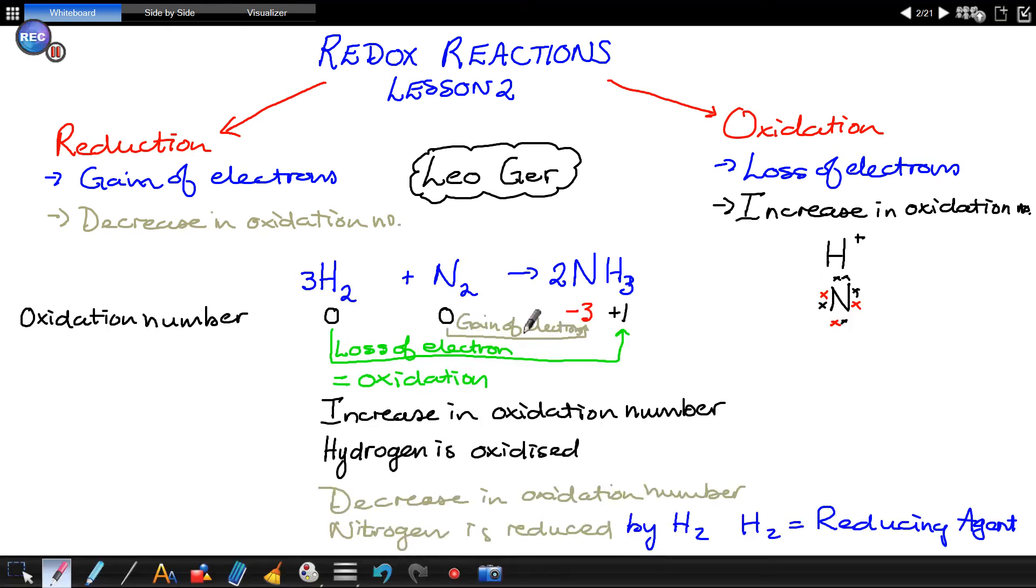And the reducing agent by itself, or in itself, is oxidized. Nitrogen causes the loss of electrons in hydrogen. So, nitrogen is the one that causes oxidation. The hydrogen is oxidized by the nitrogen. Therefore, nitrogen is the oxidizing agent. Because nitrogen causes the oxidation of hydrogen, it is called the oxidizing agent.